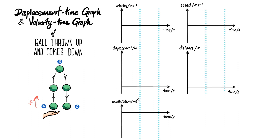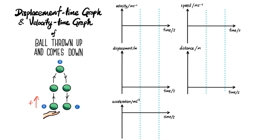Let's analyze the motion from A to B to C. At point A, that's the point where the ball leaves the hand — the hand is no longer in contact with the ball, so there's no upward force acting on it. The only force acting on the ball is its own weight, W equals mg. Gravitational field strength g on Earth is 10 N/kg, equivalent to the acceleration due to free fall, which is 10 m/s².